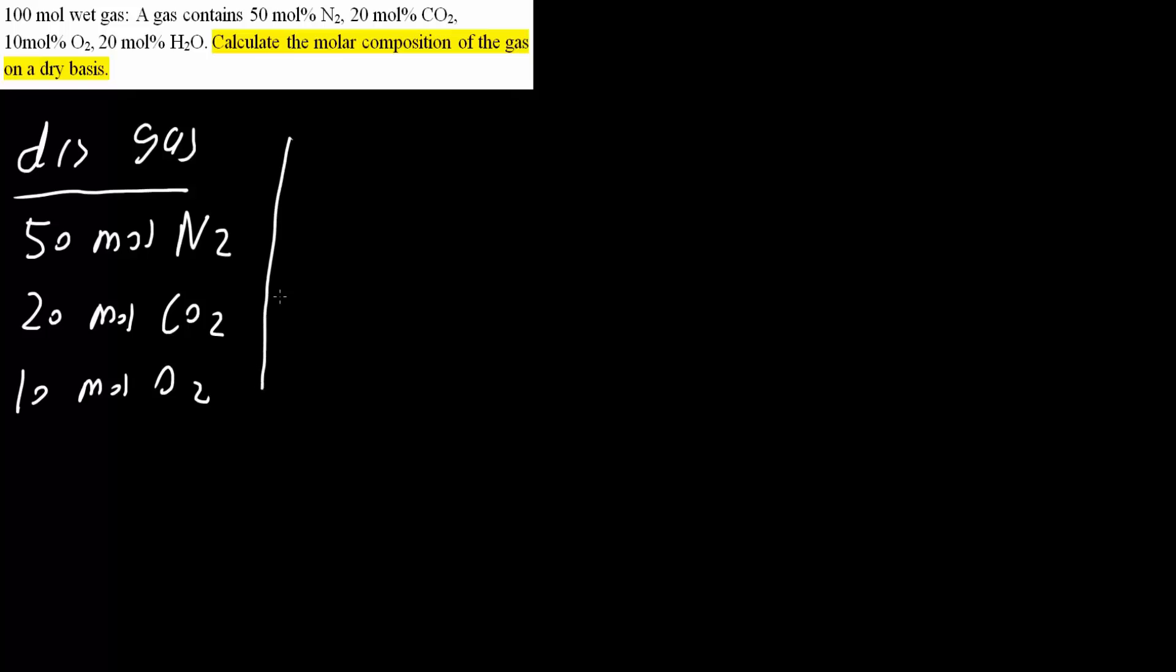And so next we do 50 plus 20 plus 10 gives us 80. And so to get the dry basis we say 50 divided by total 80 is equal to 0.625 moles of nitrogen per mole of dry gas.